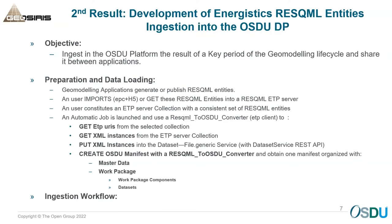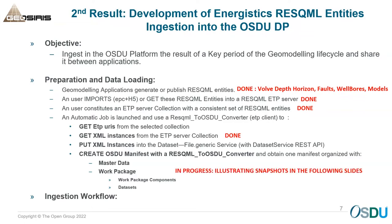We are now generating geomodeling applications — we did that on a vault, exported information into a ResQML ETP server, and used ETP server collections with a consistent set of ResQML entities to ingest this information. We retrieve the XML instances from the ETP server collection and place them via the dataset service into the data store. We then created a ResQML-to-OSDU converter that creates master data, work packages, work package components, and assets. Ingestion is done with a manifest-by-reference script, including validation and integrity checks.